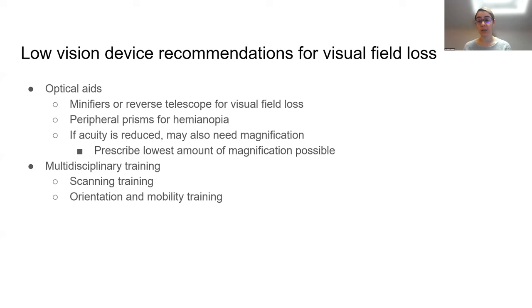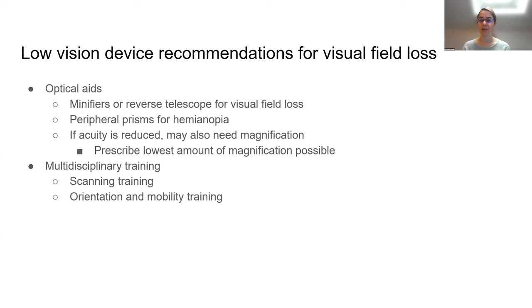If acuity is reduced in patients with visual field loss, we also need to prescribe magnification, but very carefully. If we over-magnify, patients will only see a little bit at a time. With that field of view and magnification trade-off, too much magnification means fields of view will be too small. In a patient with very constricted visual fields, they might only get a fraction of a letter at a time, which can make for very difficult reading.